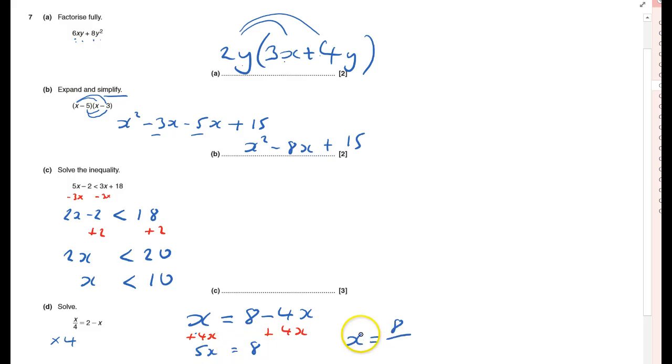And now X equals 8 divided by 5. I can just leave it like that - that would give me my 3 marks. Or I could change that into a mixed fraction. 3 fifths I know is 0.6, so I can change it into 1.6, or 1 and 3 fifths, or 8 fifths. That's question seven done.